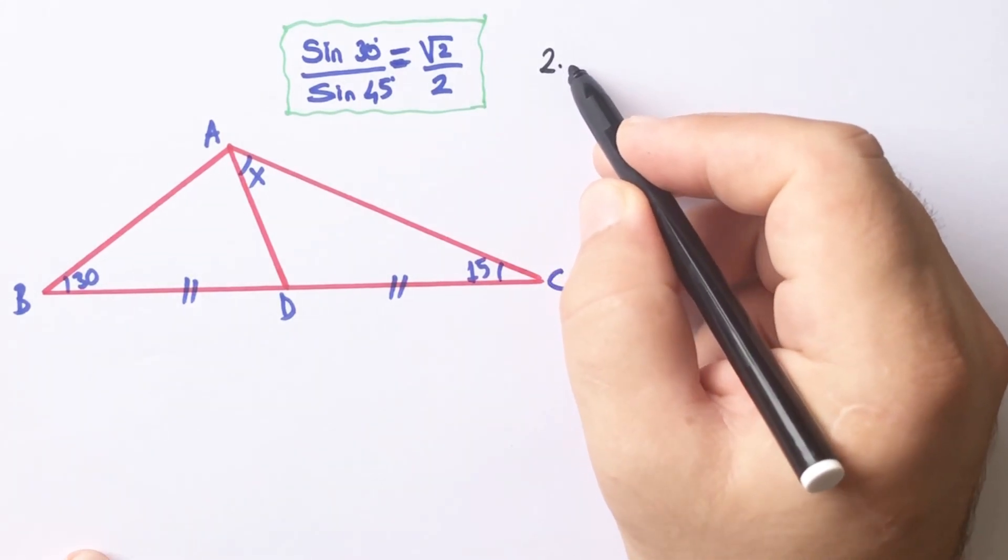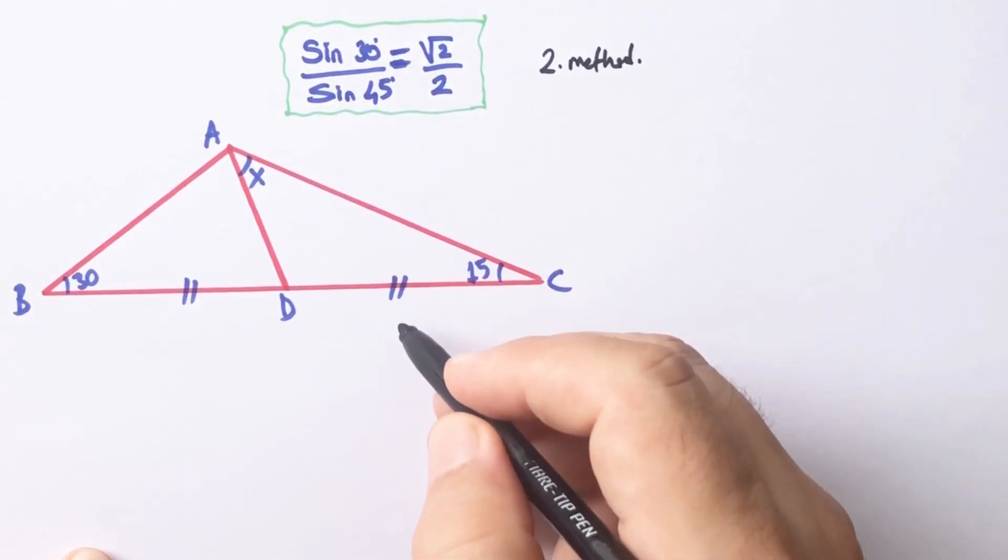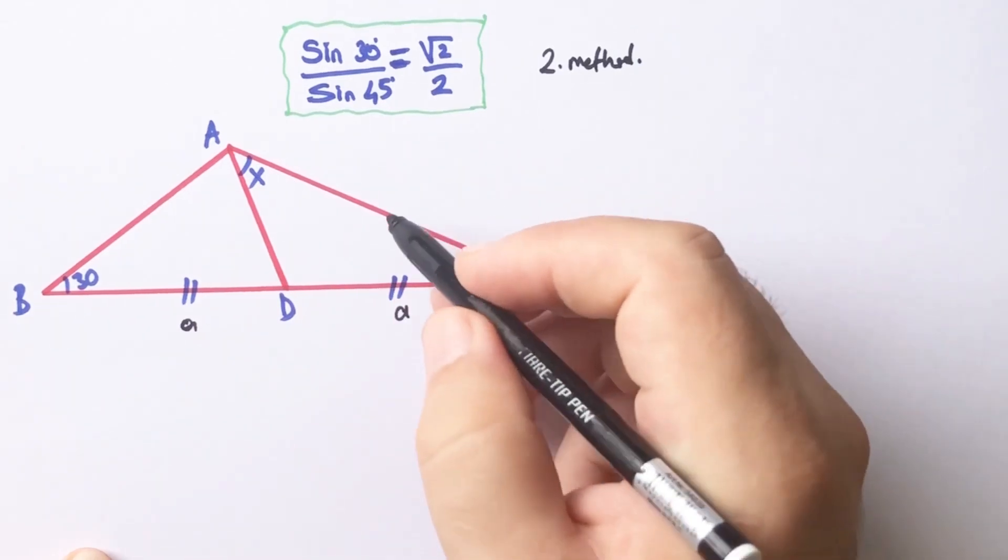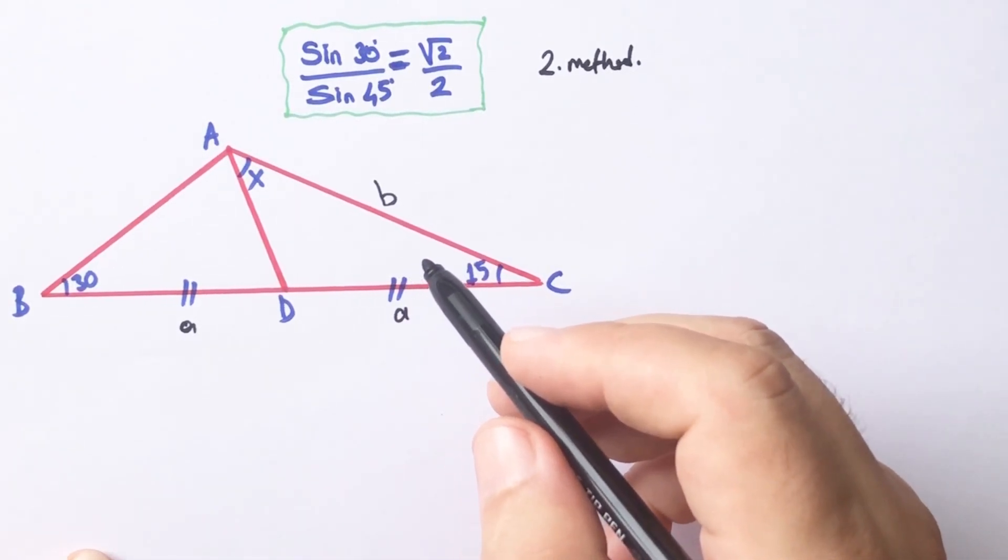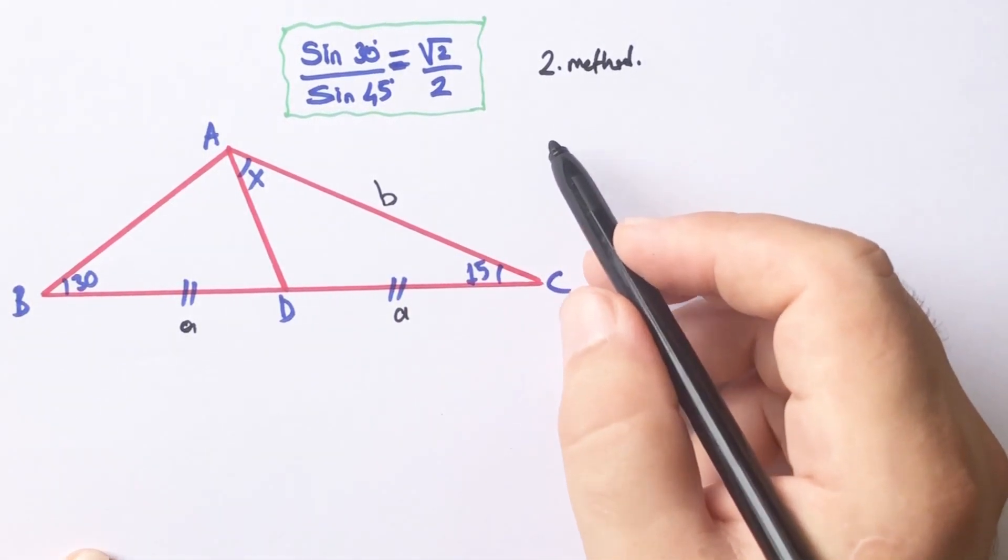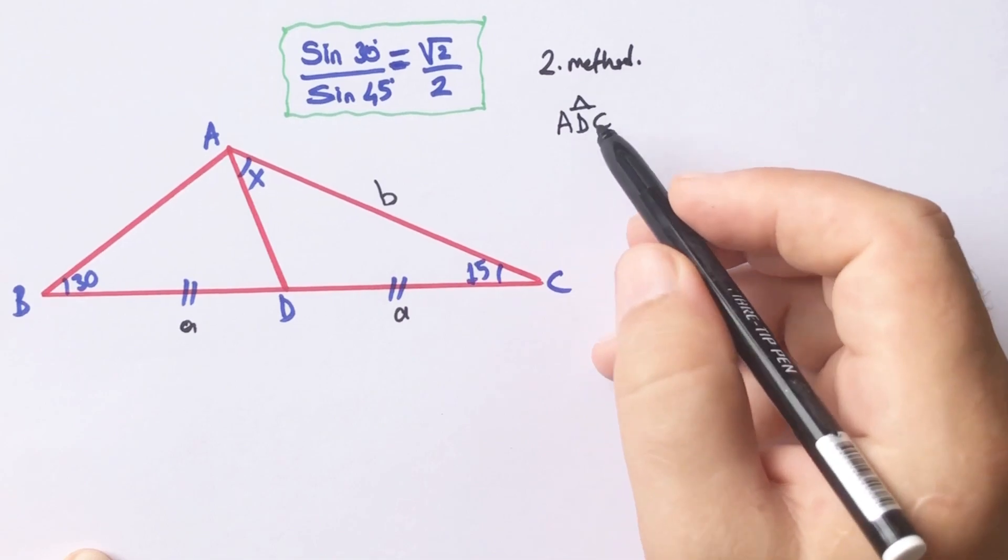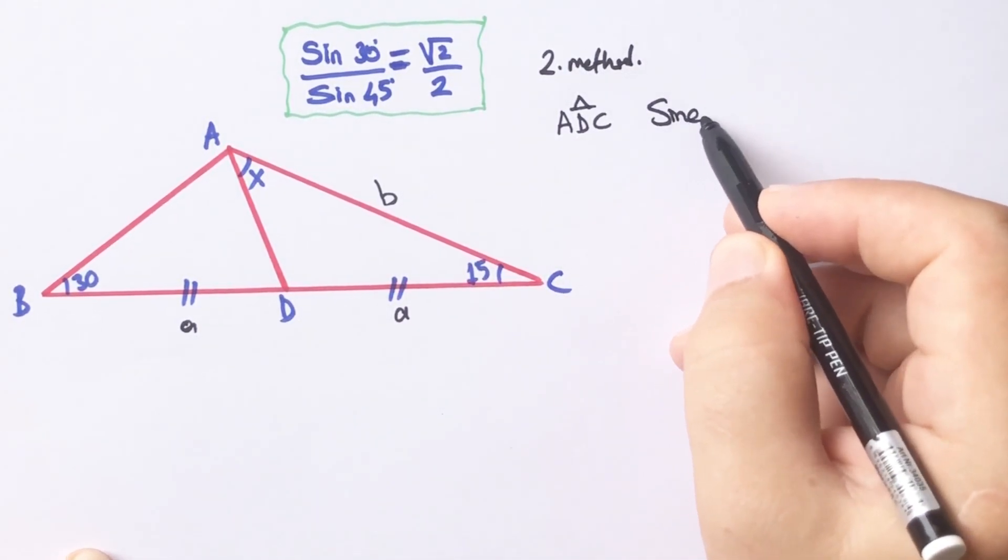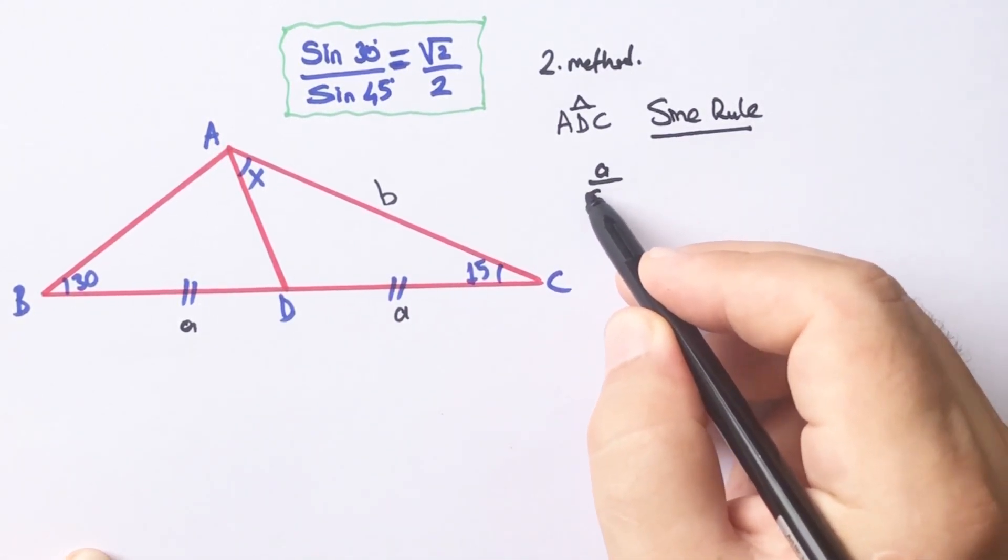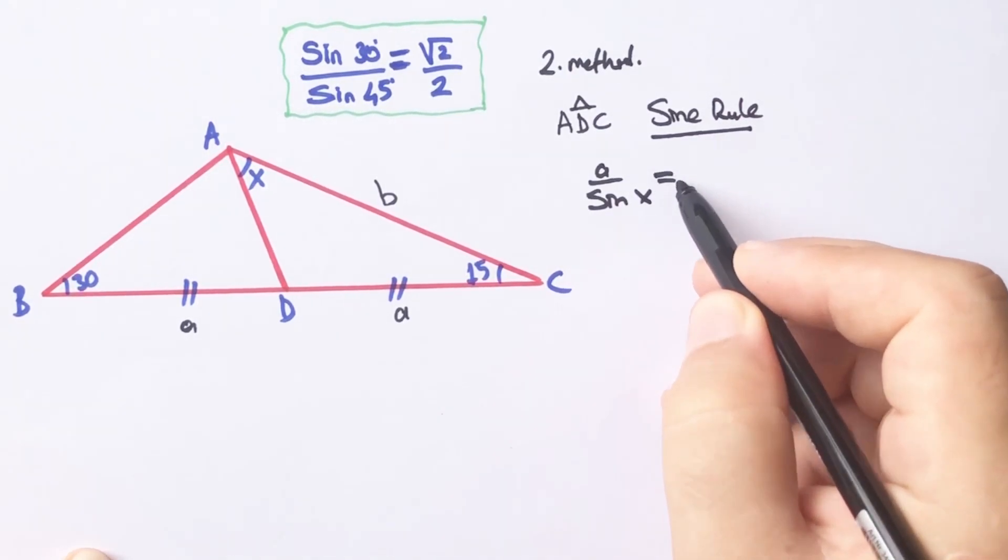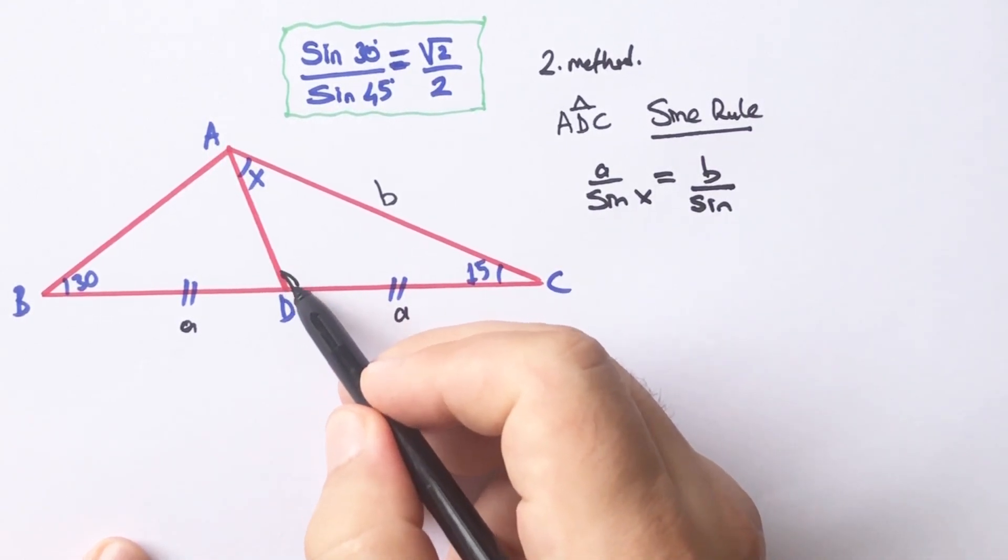Now we will apply second method using sine rules. Let's call these equal parts a unit and this length I'm going to call b. According to sine rules for this triangle, a over sine x must be equal to b over sine here.